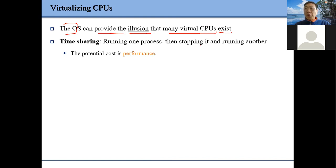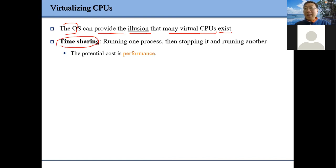Suppose we only have a limited number of CPUs — nowadays maybe eight cores or four cores. But when we look at our system, at any particular moment we may have up to hundreds of processes running. It's impossible to give each process one physical CPU, so the idea is very simple: time sharing. We run one process on one CPU for a time period, then stop, then run another process.